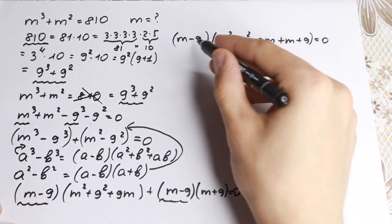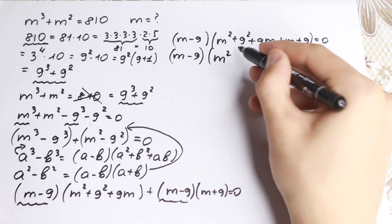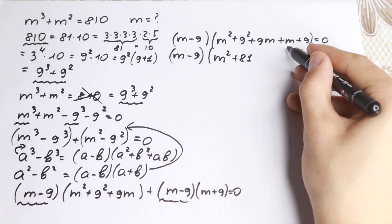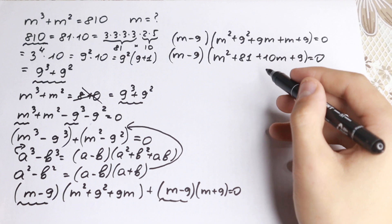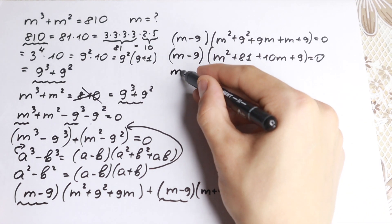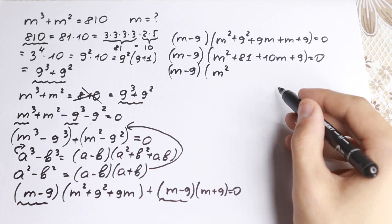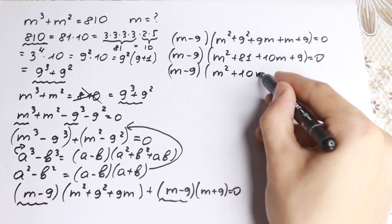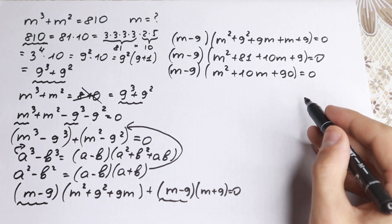We can see that (m − 9) appears in both terms, so we factor it out: (m − 9)(m² + 81 + 9m + m + 9) = 0. Combining like terms: 9m + m = 10m, and 81 + 9 = 90. Changing the order, we get: (m − 9)(m² + 10m + 90) = 0.